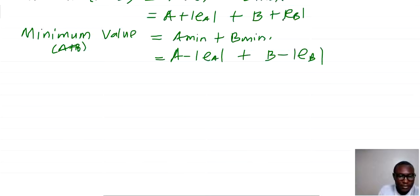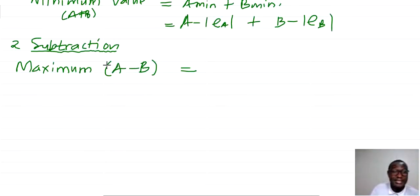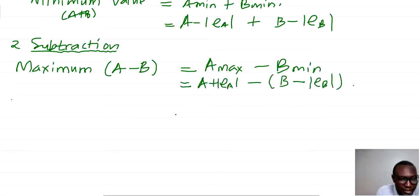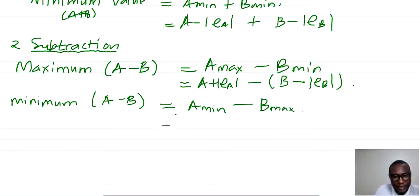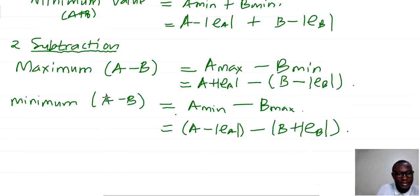Now for subtraction: the maximum value of A minus B is obtained if we maximize A and minimize B, giving A max minus B min. For the minimum value of A minus B, A should be minimum and B should be maximized. So minimum of A minus B equals A minus EA minus (B plus EB).